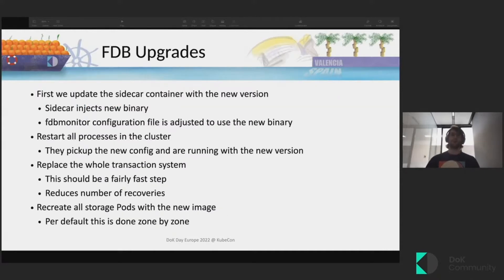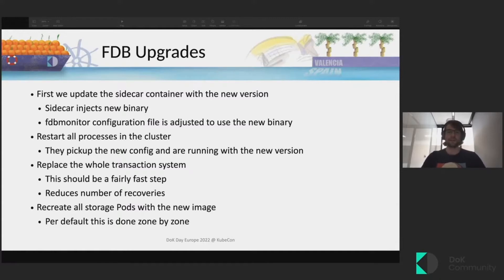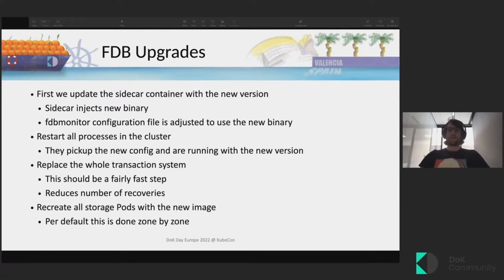One interesting thing is how we do upgrades with the Kubernetes operator, which is a bit special compared to most other operators in the stateful world. The first step is updating the sidecar container. We have a sidecar alongside the main container, and the main container runs the FoundationDB process. The updated sidecar copies the new version into the main container, then the FoundationDB monitor configuration file is adjusted to point to the new binary. This lets us restart all processes in the cluster at the same time so they pick up the new configuration and dynamically copied FoundationDB version. We benefit from the fact that you can update images in a running pod without requiring the pod to restart fully.